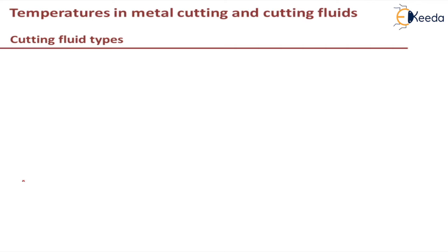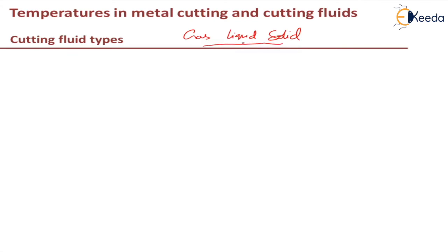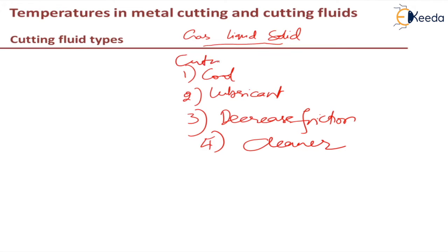Cutting fluids are used basically as a lubricant or a coolant, which improves the cutting condition and also the tool life. They can be in gaseous, liquid, or solid form. The main purposes are: first, to cool the tool; second, to lubricate it; third, to reduce friction; and fourth, to act as a cleaner.